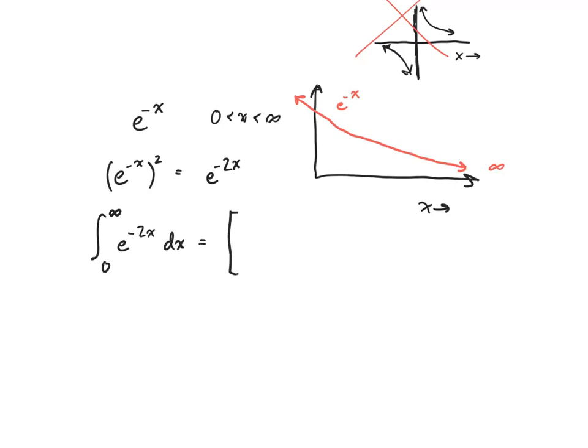Now, when I find this antiderivative, it should be negative one half e to the negative 2x evaluated at the boundaries, zero and infinity.